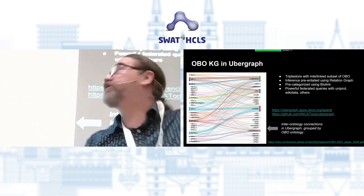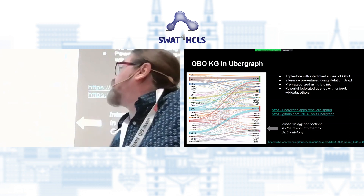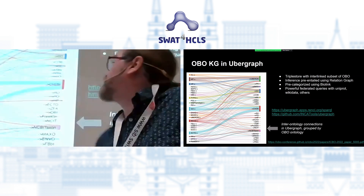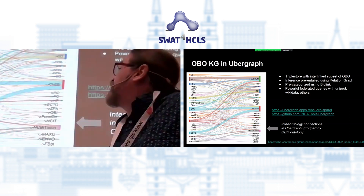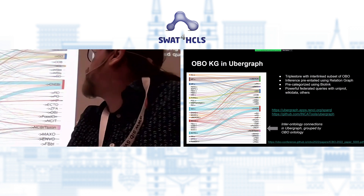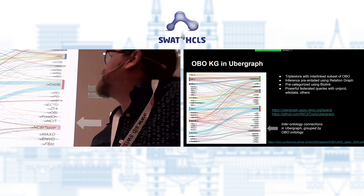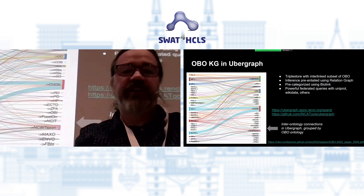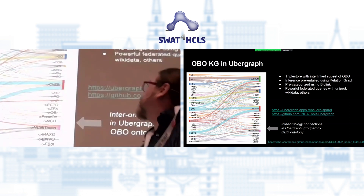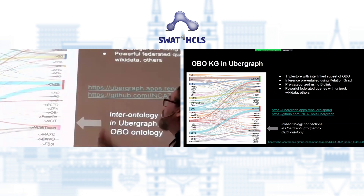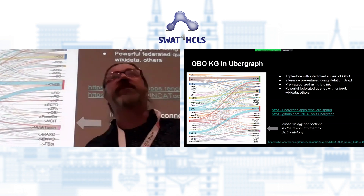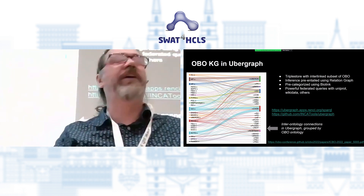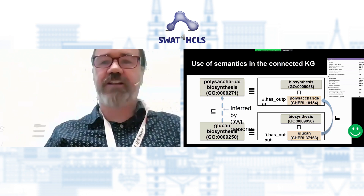This shows roughly the scale of the connections between some of the different ontologies. Key ones include the gene ontology and Mondo, fish and yeast phenotype ontologies, mammalian and human phenotype ontologies, all making heavy use of ChEBI — which is natural given the centrality of chemical entities to all of science.